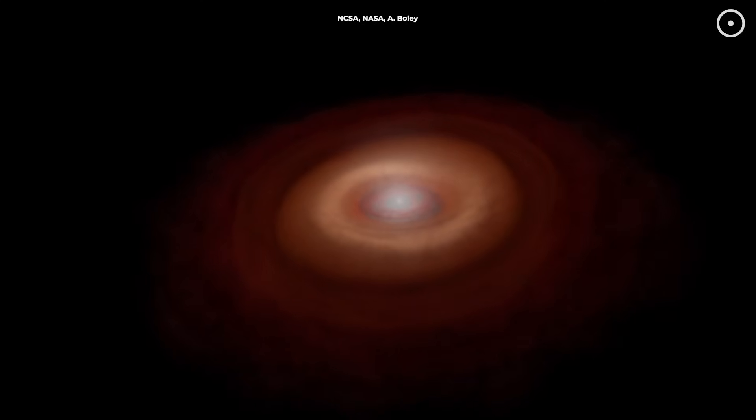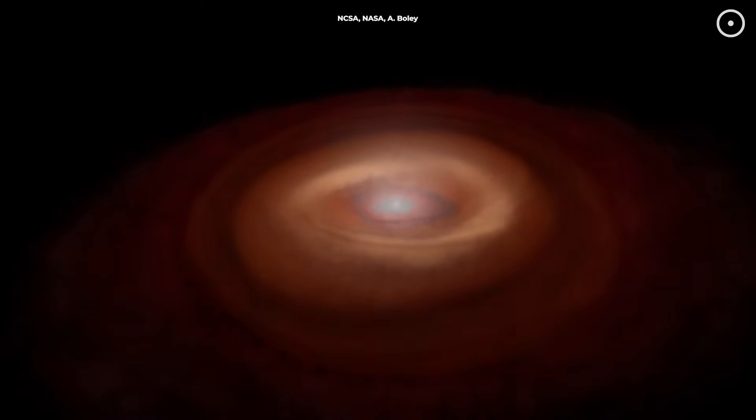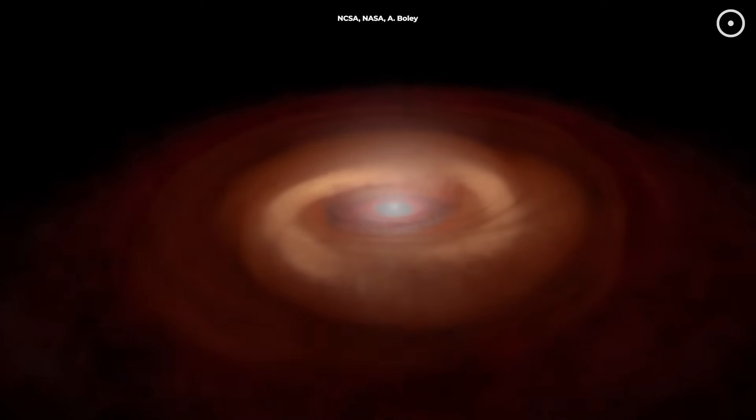And speaking of birth stories, there's something else hidden in this image that's absolutely crucial to understanding how planets like Earth form. This dark band in the middle is a massive disk of dust and gas. And inside that disk, something incredible is happening. We're watching the very first steps of planet formation.